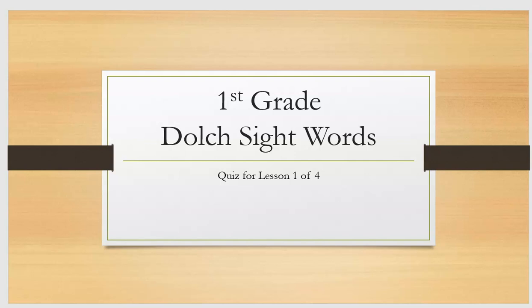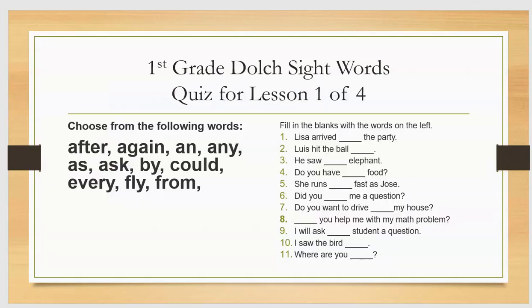Here is the First Grade Dolch Sight Words quiz for Lesson 1 of 4. Please take out a sheet of paper and a pen or pencil and copy and complete sentences 1 through 11 by choosing from the following words. After,